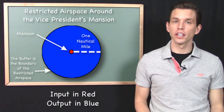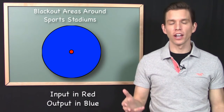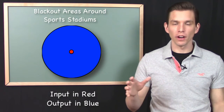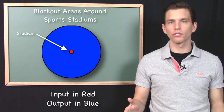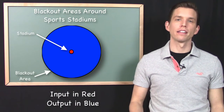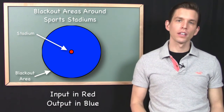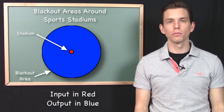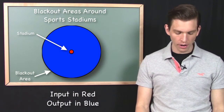Another example a student gave me once was blackout areas around ballgame stadiums. Sometimes a television broadcast of a ballgame will be blacked out within a certain distance of the stadium because they're trying to encourage people who are close by to come buy a ticket and watch the game live. So how would you compute this blackout area? This is a buffer operation around a stadium.